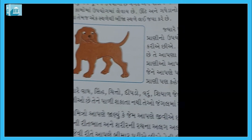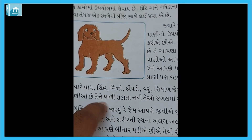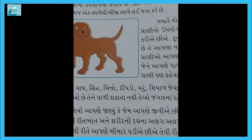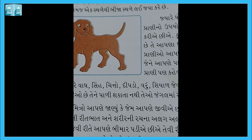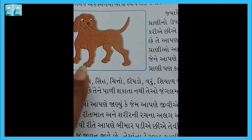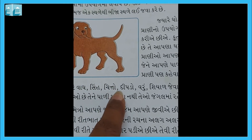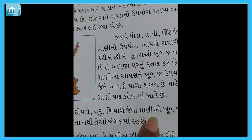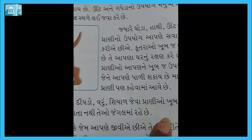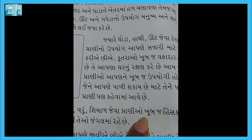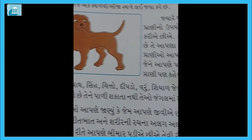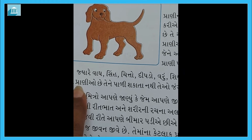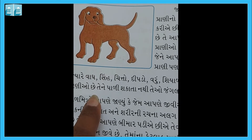જે પ્રાણીઓને આપણે ઘરમાં નથી રાખી શકતા, પાળી નથી શકતા, એ જંગલમાં રહે છે - તેને જંગલી પ્રાણીઓ, Wild Animals, કહેવાય છે. વાઘ, ચિત્તો, સિંહ, દીપડો, વરુ, શિયાળ - આ બધા પ્રાણીઓ ખૂબ જ ખૂંખાર છે, મનુષ્યને નુકસાન પહોંચાડી શકે છે. એટલા માટે આપણે તેમને ઘરમાં નથી રાખી શકતા, પાળી નથી શકતા - એટલે ઈ જંગલી પ્રાણીઓ છે અને જંગલમાં રહે છે.